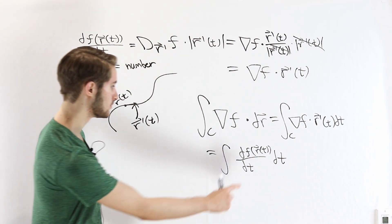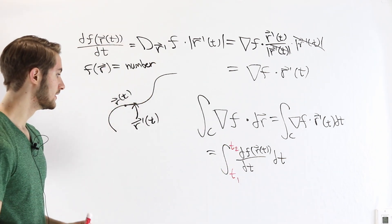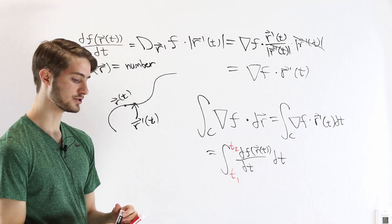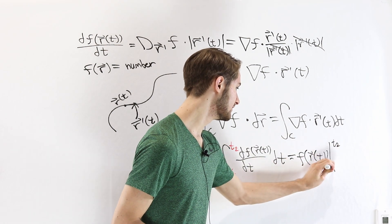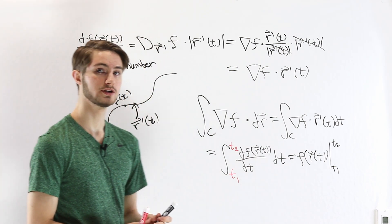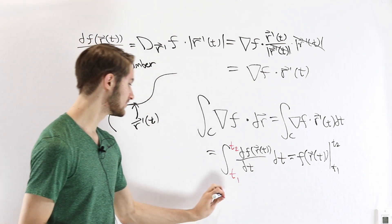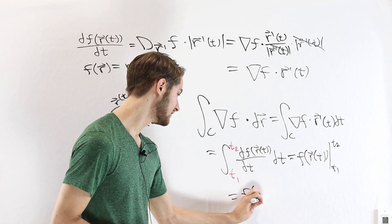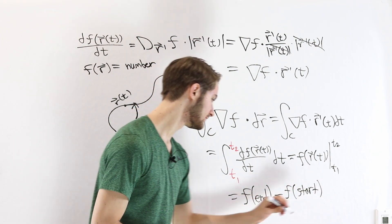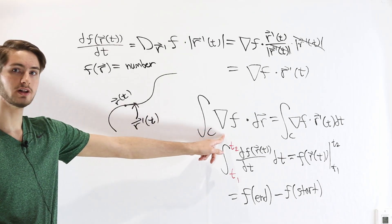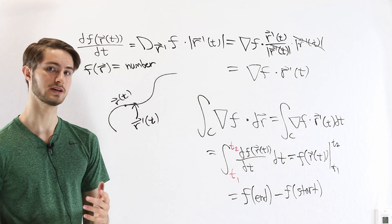We know what the integral of a derivative is — it just gives us the original function back. So by the fundamental theorem of calculus, if we're looking at a parametrization r(t) that goes between two points t1 and t2, the integral of the derivative gives us f(r(t)) evaluated at t2 and t1. These values t2 and t1 represent the start and end of our curve C. So this equals f at the endpoint minus f at the start point — the gradient theorem tells us we just evaluate the start and end points.